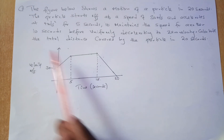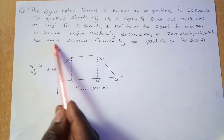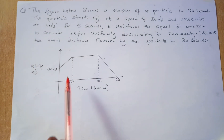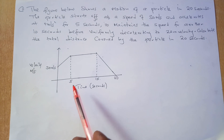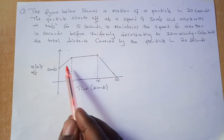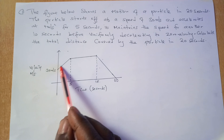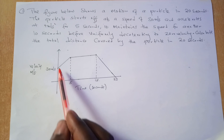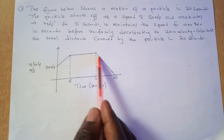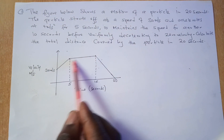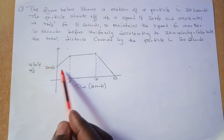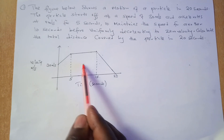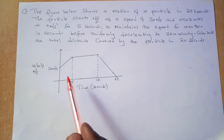The question asks: calculate the total distance covered by the particle in 20 seconds. Anytime they ask for distance, it is given by the area under the graph. In this case we need the whole area, which has three parts — part A, part B, and part C. Add those areas together to get the total distance.